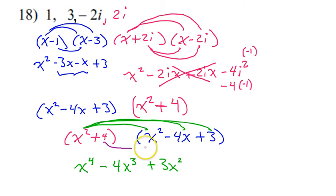Now I will distribute the 4. So 4 times x squared is 4x squared. 4 times negative 4x is negative 16x. And 4 times 3 is 12.